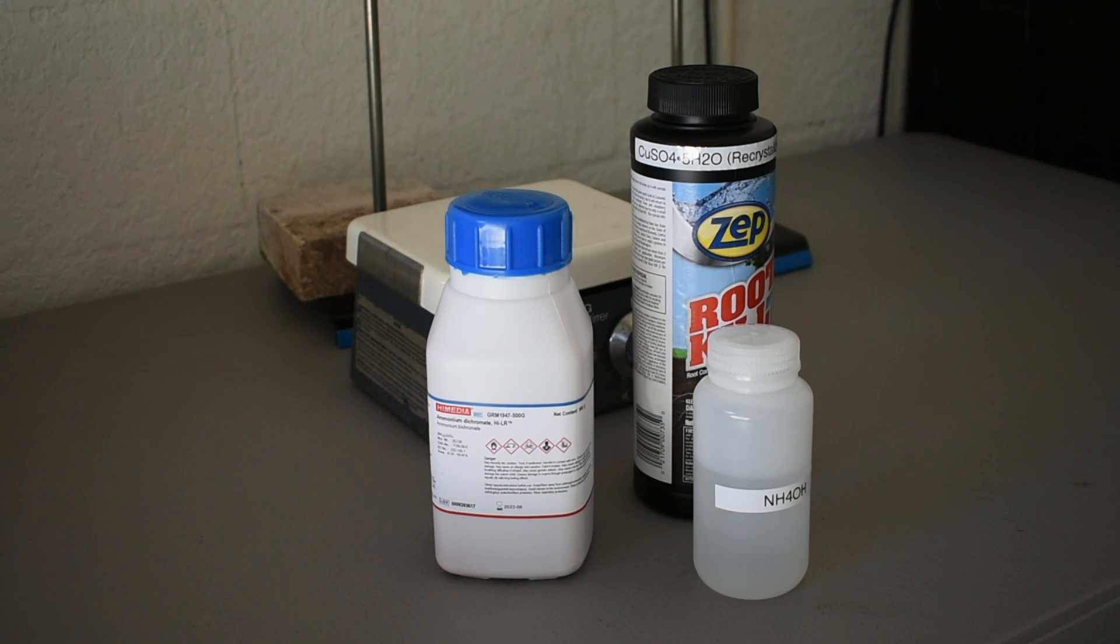Hello everybody, today we're going to make some copper chromite, which I'm going to use to decarboxylate niacin into pyridine, which I'm then going to use to make a nice copper complex. But to make the copper chromite catalyst, you're going to need three main chemicals.